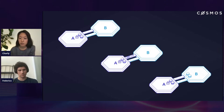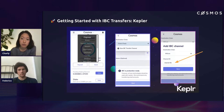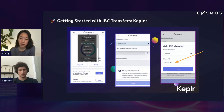The relayer carries the proof over to Zone B that the tokens are indeed on Zone A and have been locked up. When Zone B receives that proof, it knows it can mint the corresponding assets on Zone B. In your wallet — for example with Keplr — you select the chain you want to transfer from and then you select a transfer channel. On Keplr, the channel is something that you have to type in.